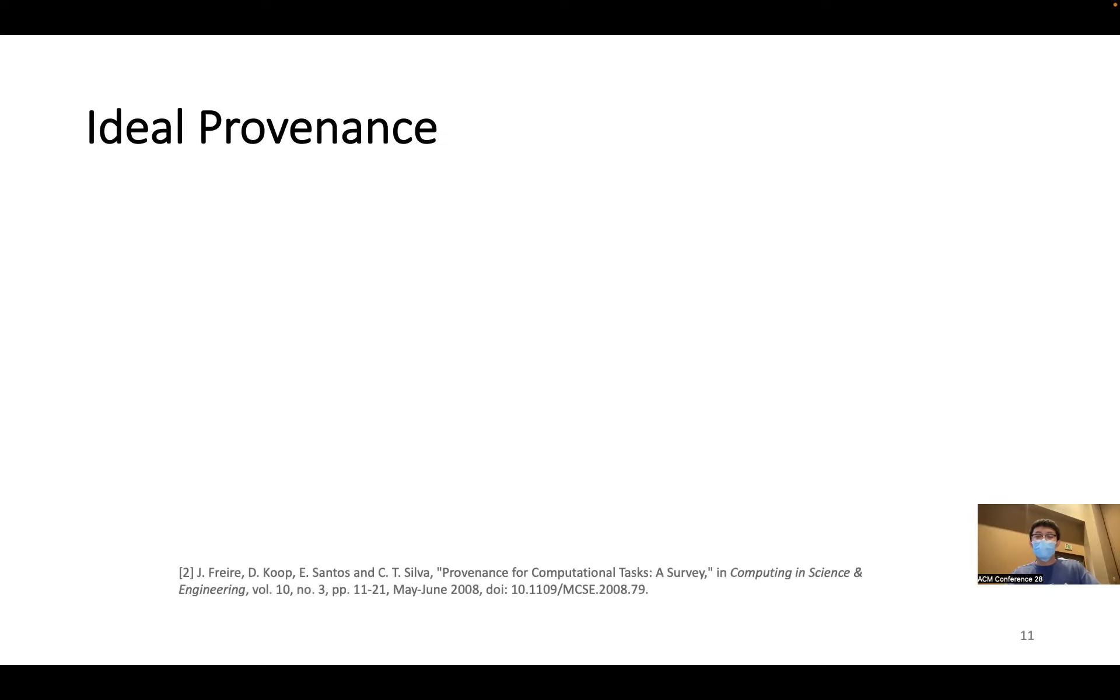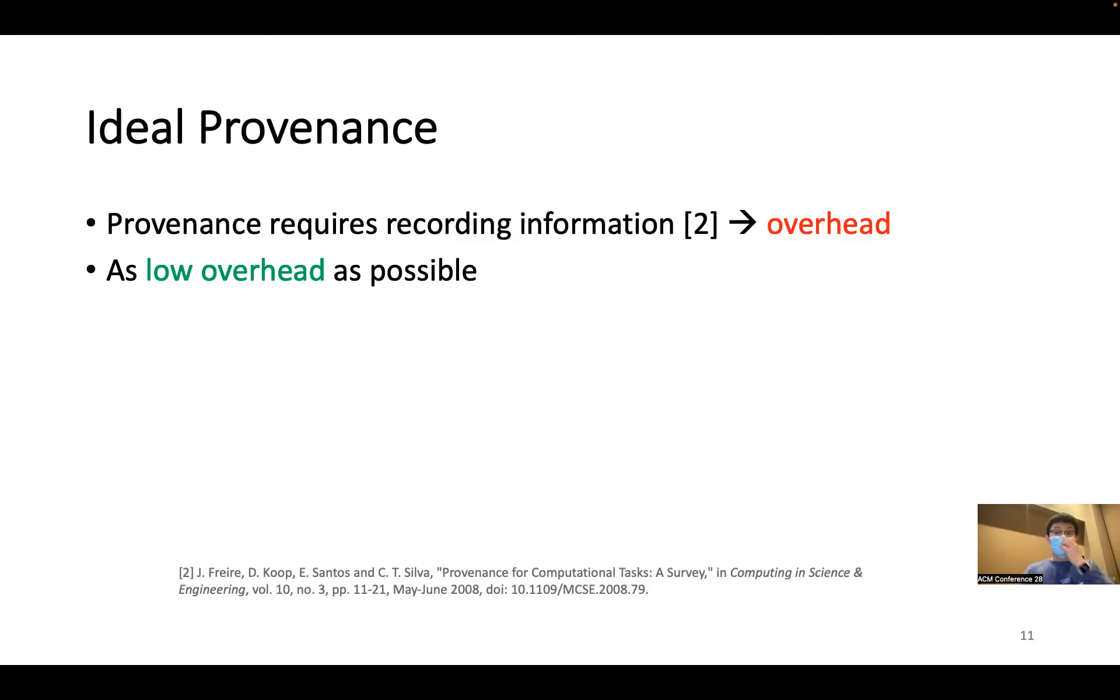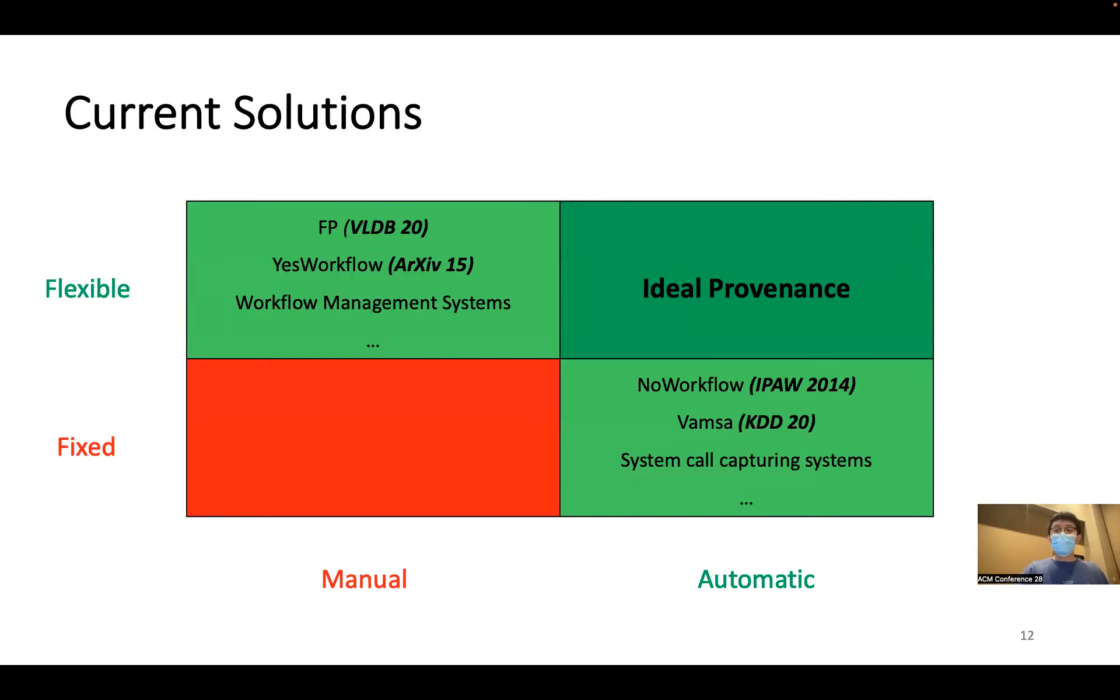Another aspect of provenance is that it comes with costs. It requires recording certain information at runtime, so that it can provide information afterwards, and this introduces overhead. So another aspect of ideal provenance is it should have as low overhead as possible. With this idea in mind, now let's look at how current solutions work.